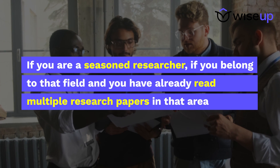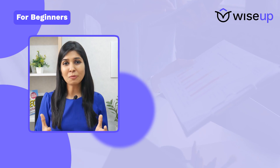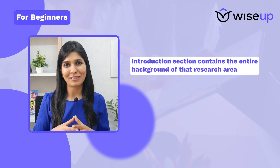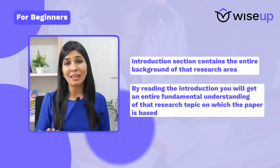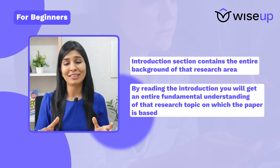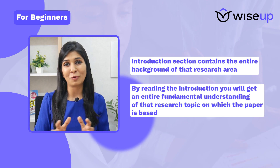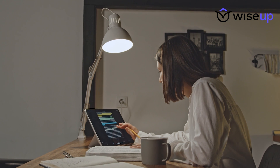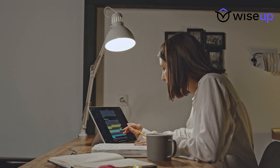If you're a beginner, I would highly recommend that you start by reading the introduction section first. The introduction contains the entire background of that research area, and just by reading it you will get a fundamental understanding of the research topic. Once you've read through the introduction, you can then go on to reading the abstract and the conclusion, just like the seasoned researchers. At this stage, if you come across unfamiliar technical terms again and again, you can use the help of certain AI tools.